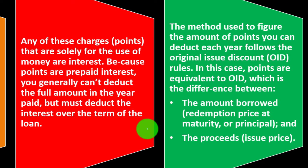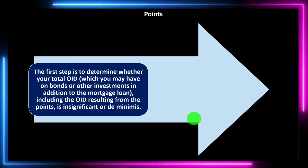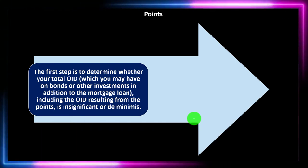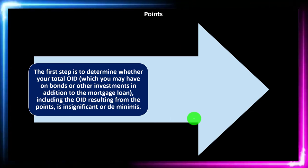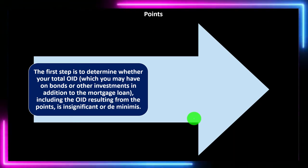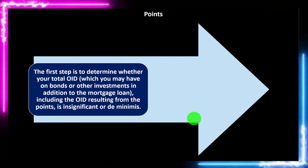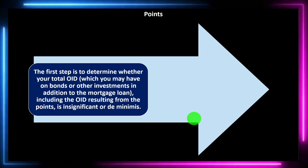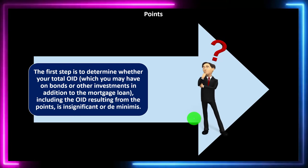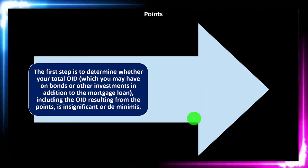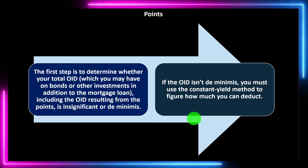Points are equivalent to OID, which is the difference between the amount borrowed — the redemption price at maturity or principal — and the proceeds, the issue price. The first step is to determine whether your total OID is insignificant or de minimis. If it's de minimis — basically immaterial or a fairly small amount — then you might be able to use a more simplified method, such as a straight-line method.